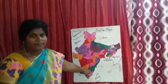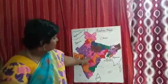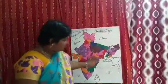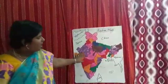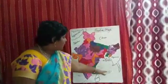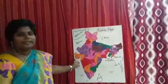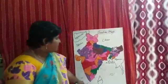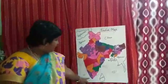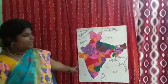Andhra Pradesh is a very nice state. It is surrounded by seas on its three sides — called Bay of Bengal, Indian Ocean, and Arabian Sea.